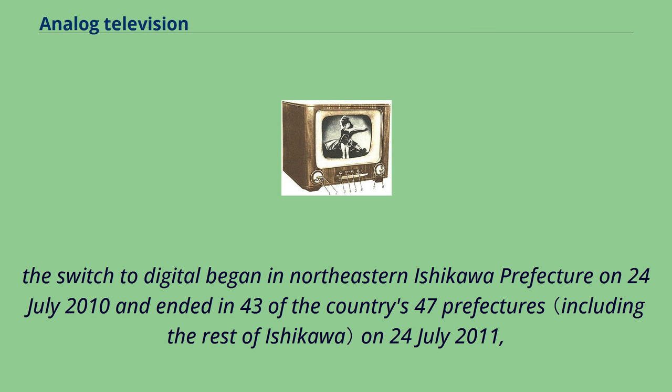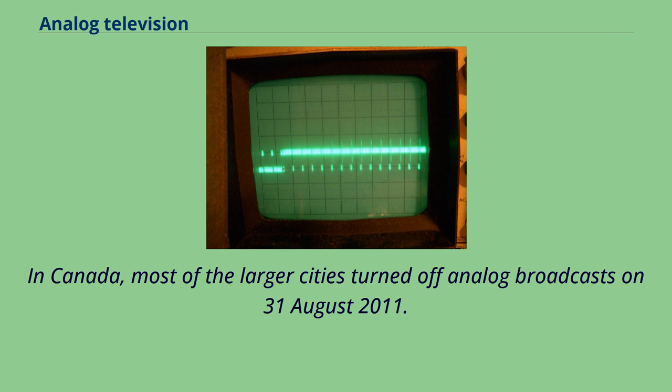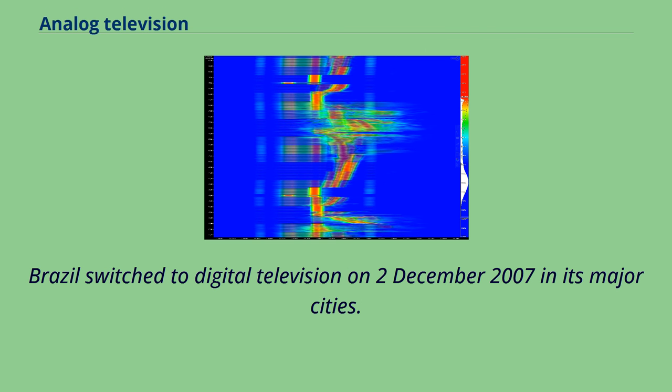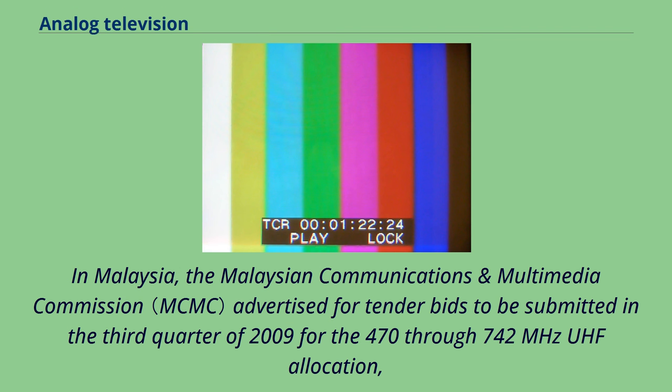In Malaysia, the Malaysian Communications and Multimedia Commission advertised for tender bids for the UHF allocation. Large portions of Malaysia are covered by television broadcasts from Singapore, Thailand, Brunei, and Indonesia. Starting from November 1, 2019, all regions in Malaysia were no longer using the analog system after the states of Sabah and Sarawak finally turned it off on October 31, 2019.